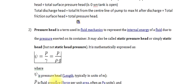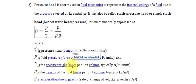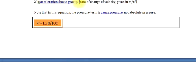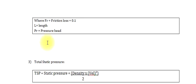Question 2: Pressure Head. Pressure head is a term used in fluid mechanics to represent the internal energy of a fluid due to the pressure exerted on its container. It may also be called static pressure head or simply static head, but not static head pressure. It is mathematically expressed as: Ψ (pressure head, length, typically in units of m) equals P (fluid pressure, force per unit area, often in Pa units) divided by γ (specific weight, force per unit volume, typically N/m³), where ρ is the density of the fluid (mass per unit volume, typically kg/m³) and g is acceleration due to gravity (m/s²). Note that in this equation the pressure term is gauge pressure, not absolute pressure. Where fr equals friction loss equals 0.1; L equals length; Pr equals pressure head.